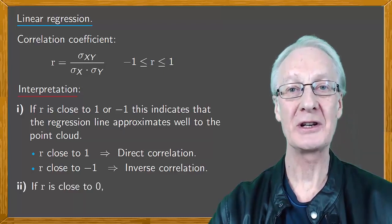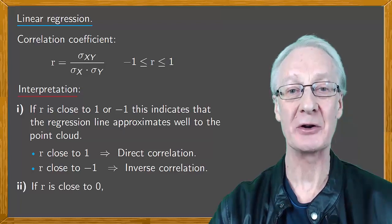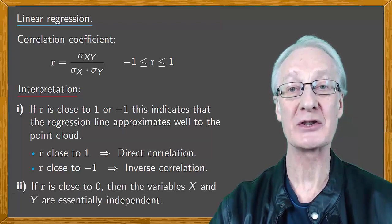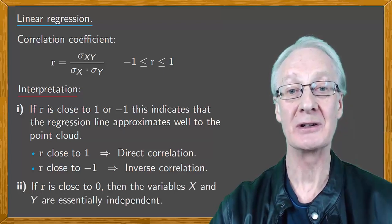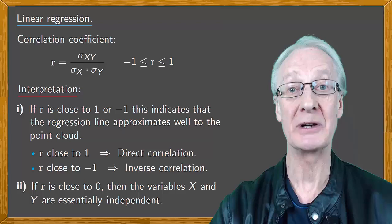If the correlation coefficient is close to zero, then the variables X and Y are essentially independent. So we can't use the regression lines to make any reliable predictions.